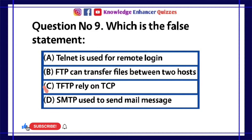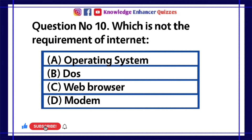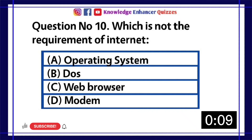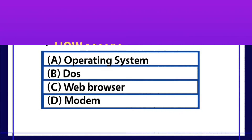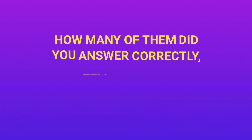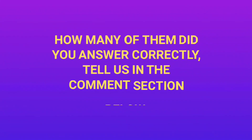Option C is the right answer. Question number 10: Which is not the requirement of internet? A. Operating system, B. DOS, C. Web browser, D. Modem. Option B is the right answer. How many of them did you answer correctly? Tell us in the comment section below.